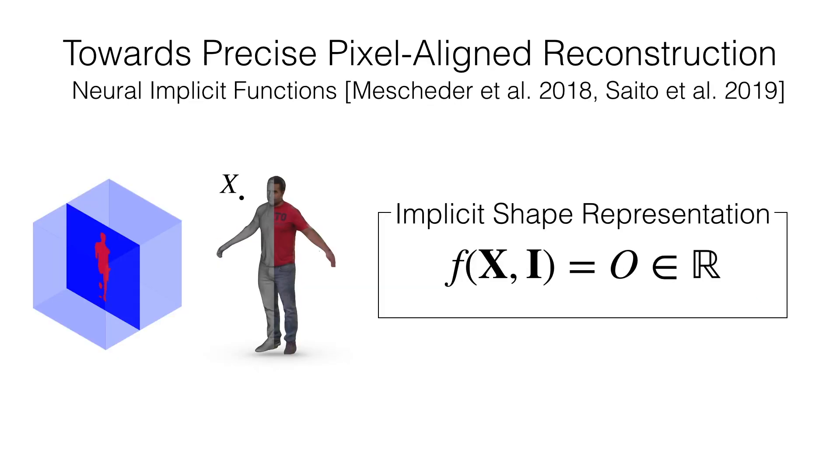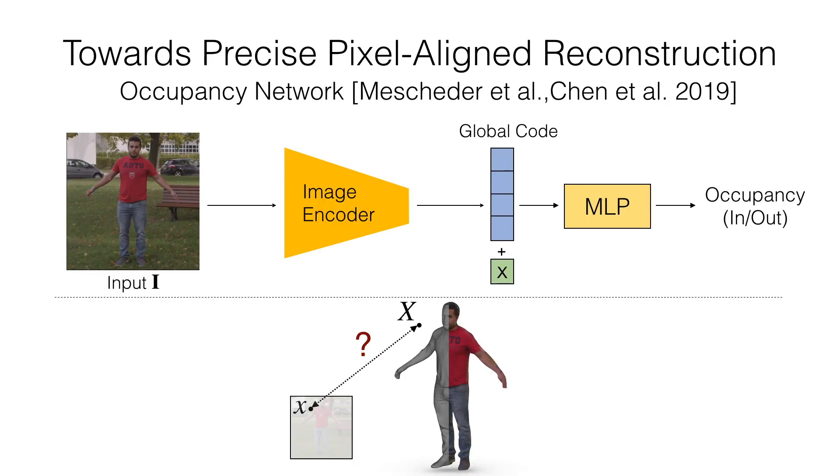In PyFu, we use neural implicit function for shape representation. 3D shapes are represented by the level set of occupancy fields parametrized by a neural network. Since this formulation does not involve any discretization, we can effectively model 3D shapes at an arbitrary resolution.